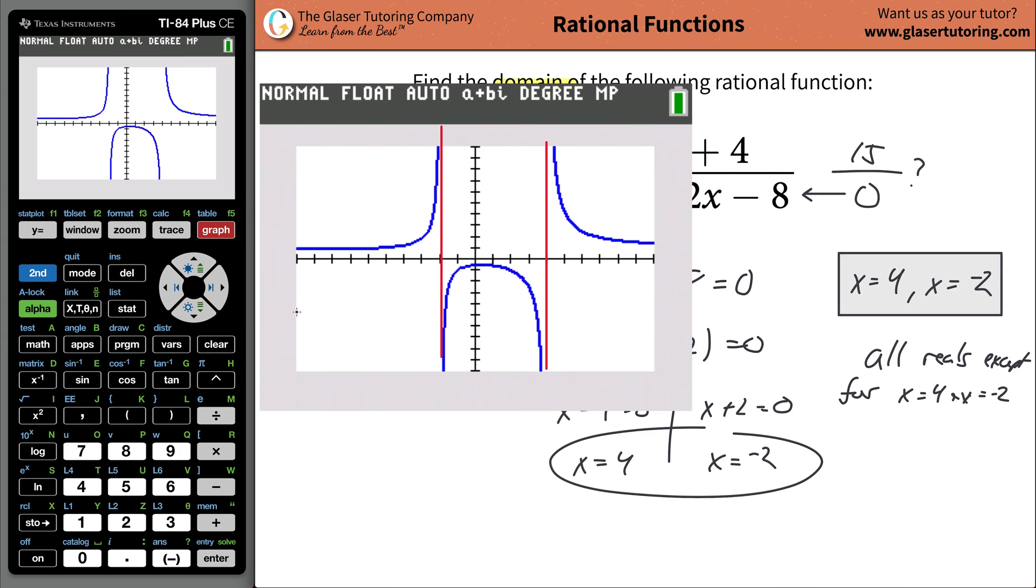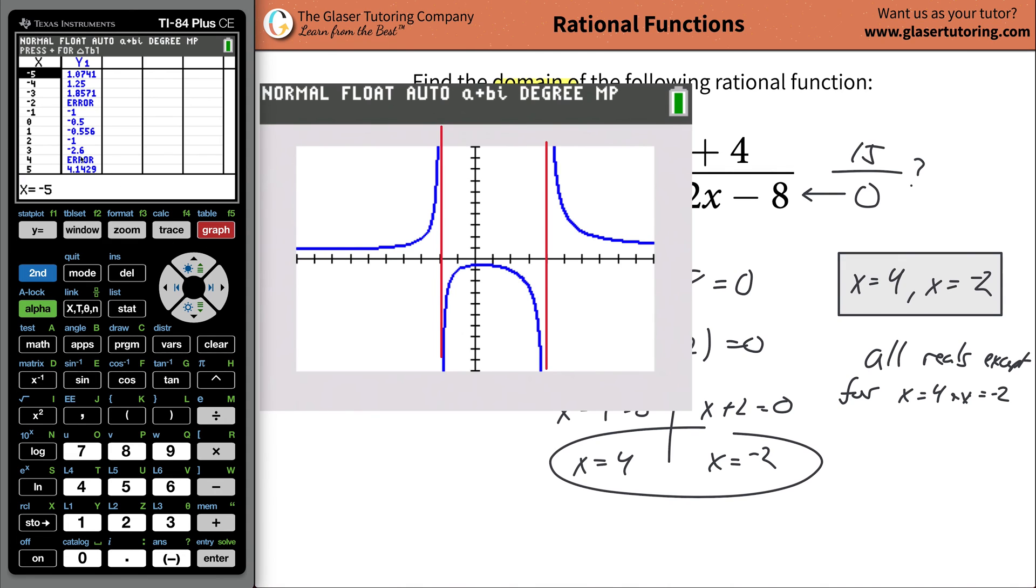And you can also use the table function in the calculator. Hit second graph. And when you use your table, look, when x is negative 2, you get an error. When x is going to be equal to 4, you get an error. That's because it's undefined. The function's undefined when x is going to be equal to negative 2 and 4. And that's what we said over here. You see how many ways you can go about this?